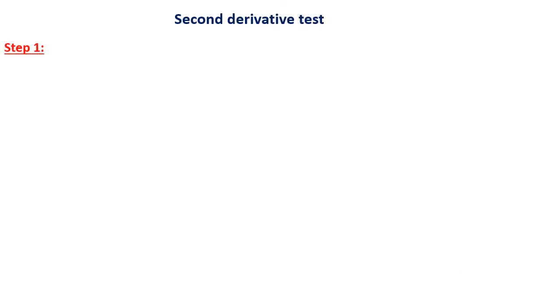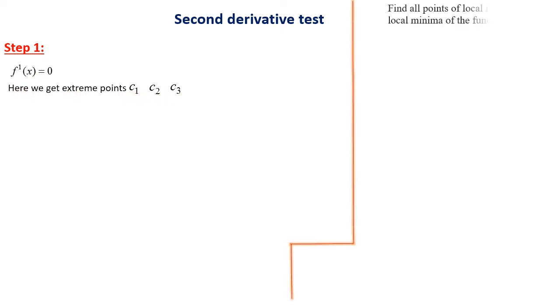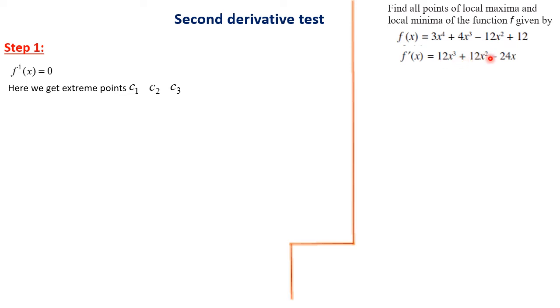Next we shall discuss the second derivative test. The working rule: Step 1 is to equate f'(x) = 0. Consider the example f(x) = 3x⁴ + 4x³ − 12x² + 12. Taking the derivative: f'(x) = 12x³ + 12x² − 24x. Setting f'(x) = 0: 12x³ + 12x² − 24x = 0.